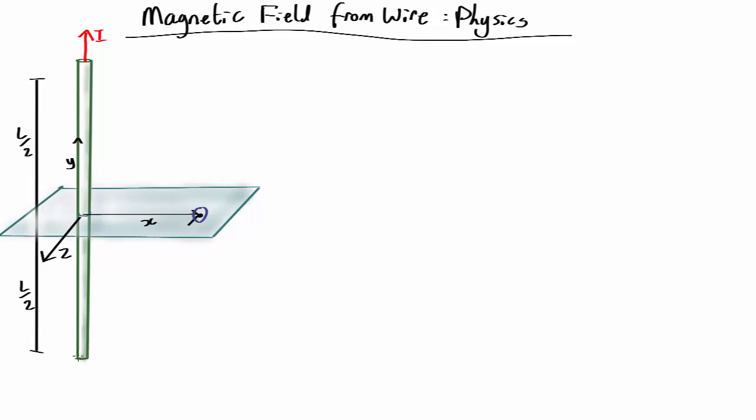So we're going to use the Biot-Savart law to work out the component due to a little bit here, that's thickness delta y, the magnetic field there that little bit produces at this point here. And then we're going to sum them up all the way up and down the wire to work out the magnetic field from this finite length of wire using the Biot-Savart law.